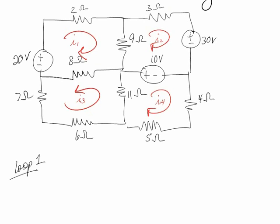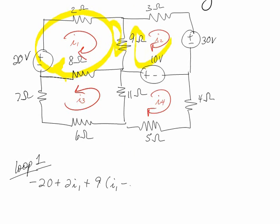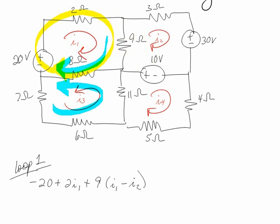Okay, loop 1. I'm going to put together an equation for loop 1. I'm going to start here and go around. So I'll start with minus 20, and I have plus 2I1, and then I have plus 9. Now as I'm going through the 9 resistor this way, the I1 is going with me, but the I2 is actually going against me. So that means it's I1 minus I2. As I continue, there's my little I1, but I3 is actually going with me. So whenever I add 8, I have 8 with I1 and then plus I3, because it's going with me.